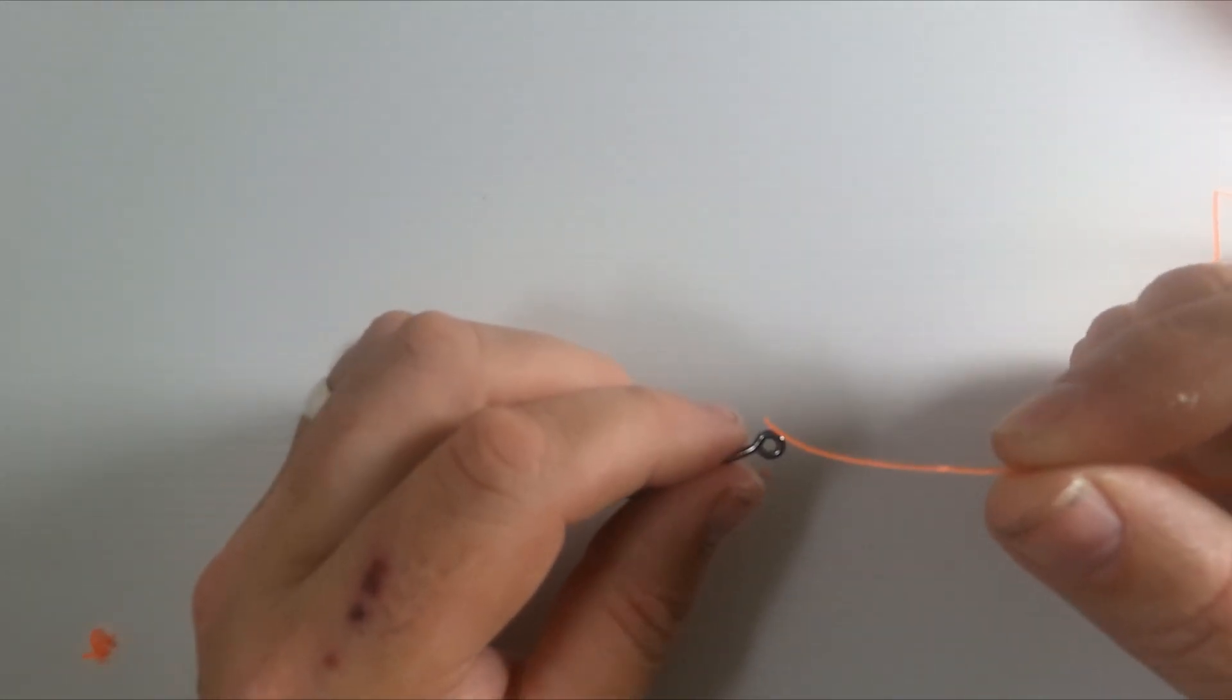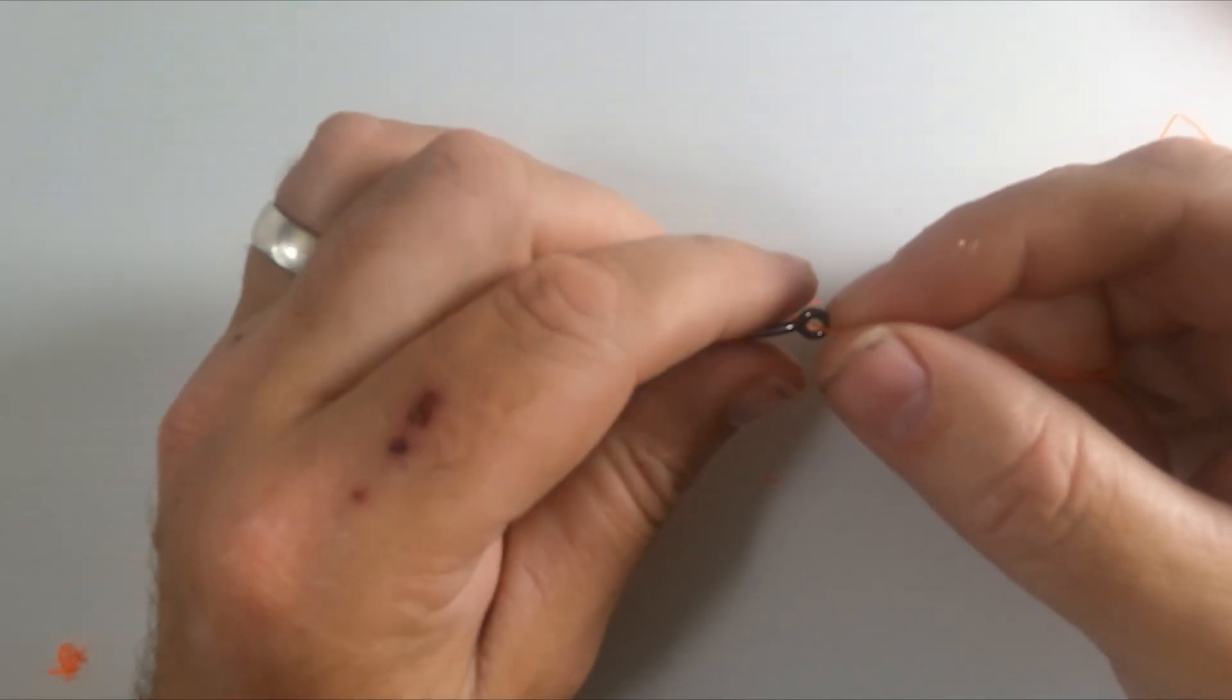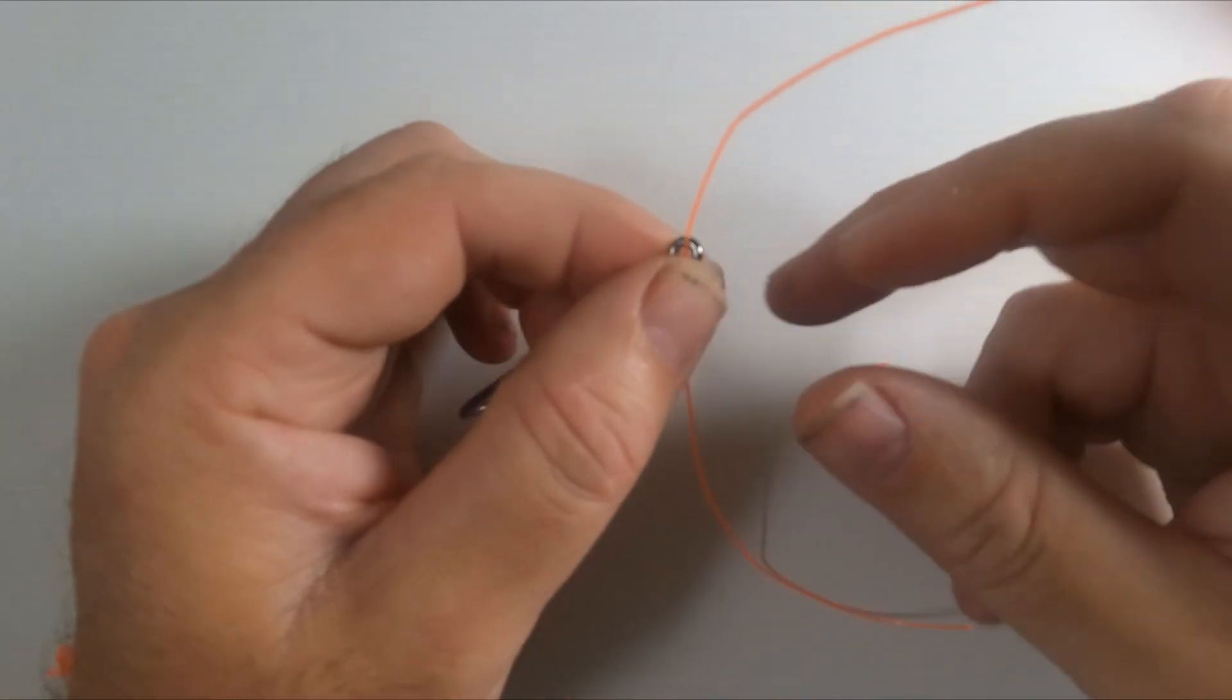Okay, so we're going to tie our Grinner knot. We're going to take our piece of line and thread it down through the eye of our hook, and then we're going to give ourselves a few inches of line to work with.